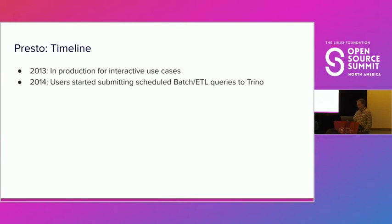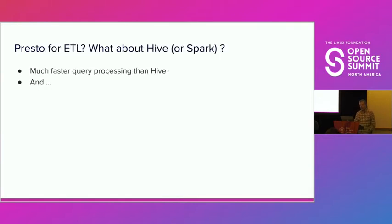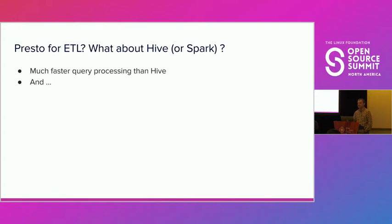At first, it might have seemed counterintuitive — why would somebody prefer Presto, which is designed for interactive use, to run batch processing? There were other engines like Hive and Spark specifically designed for batch processing. There were mainly two reasons. The first was that Presto was significantly faster. And there was a second, not less important reason I'm going to discuss, but before that, let me walk you through an anecdote from my own experience working as an engineer on Presto.